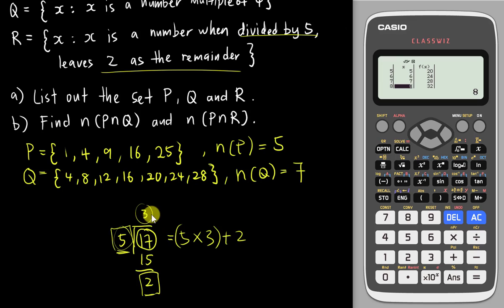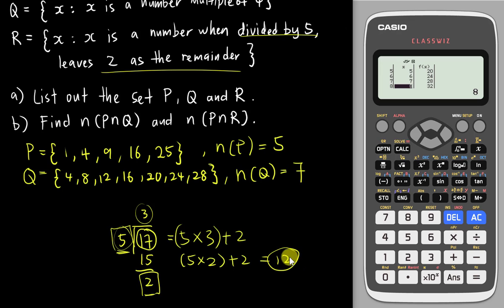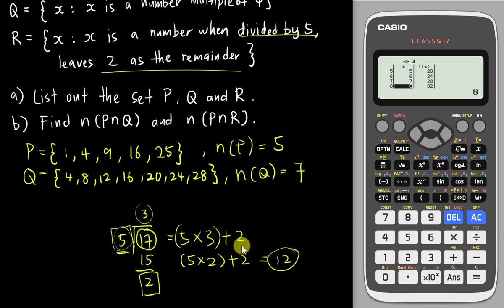So the 3 in that example is the variable I can change. If I change it to 2: 5 times 2 plus 2 equals 12. And 12 divided by 5 does leave remainder 2. So the formula for set R is 5x plus 2, where x is the variable and 5 and 2 are constants.